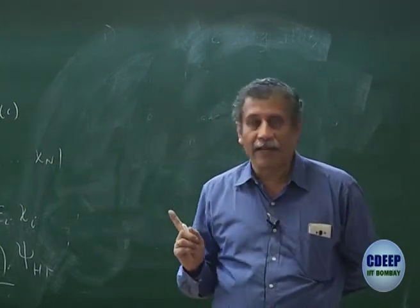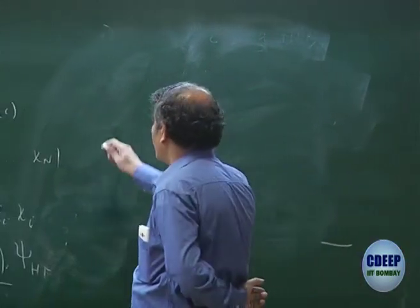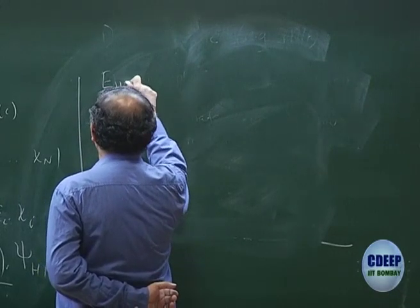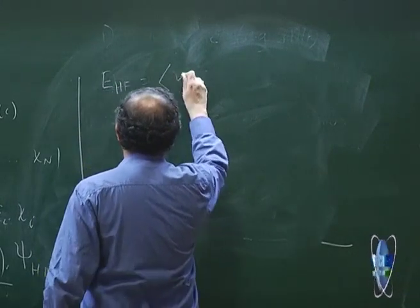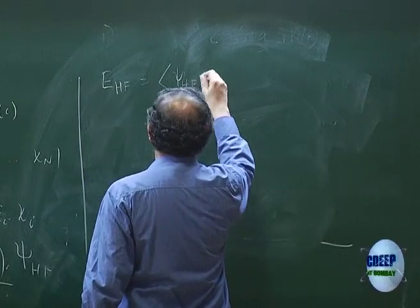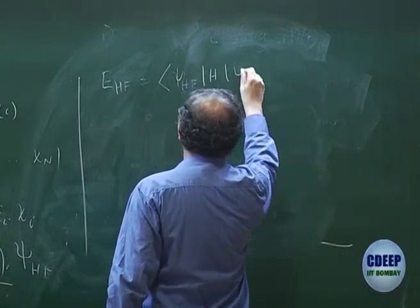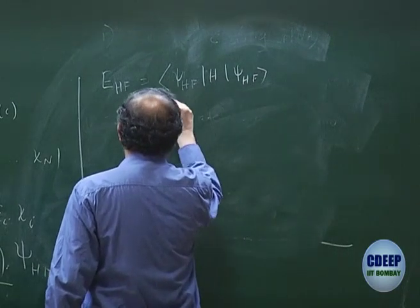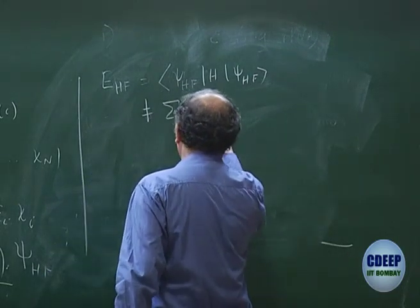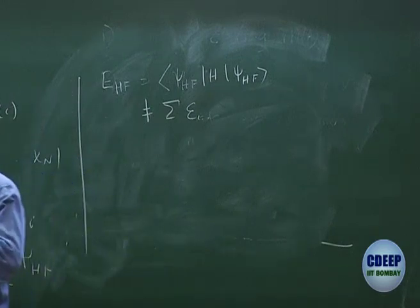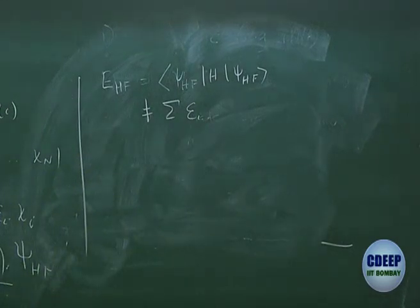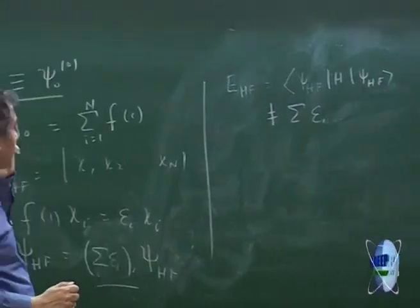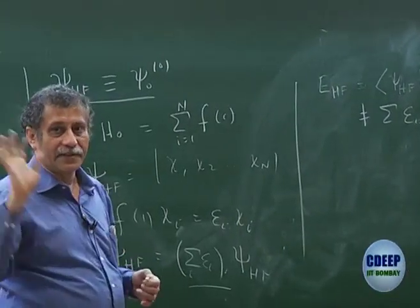I want to repeat that because the Hartree-Fock energy, as I have said many times, has been defined as ⟨ψ_HF|H|ψ_HF⟩, which is not the sum of the orbital energies. In fact, it is the sum of the orbital energy minus the over-counted terms — minus half of the J and K antisymmetrized integrals.